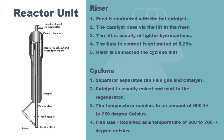In the riser, feed is contacted with the hot catalyst. The catalyst rises via lift in the riser. The lift is usually of lighter hydrocarbons and the estimated time would take around 0.25 seconds to accomplish. The riser is connected to the cyclone unit. In the cyclone unit, a separator separates the flue gas and catalyst. The catalyst is usually covered with coke and sent back to the regenerator. The temperature in the cyclone reaches approximately 600 to 750 degrees Celsius, while the flue gas is received at a temperature of 600 to 700 degrees Celsius.